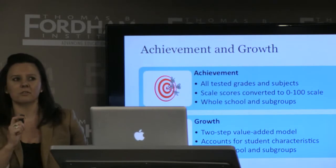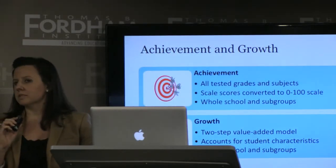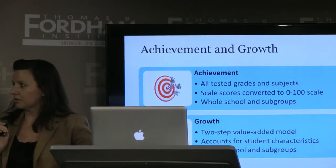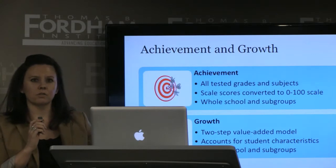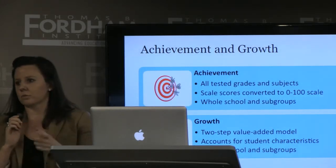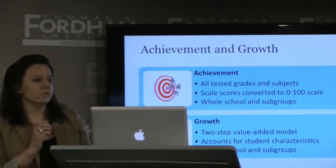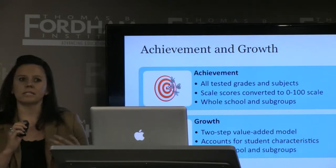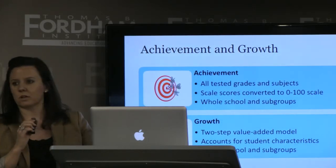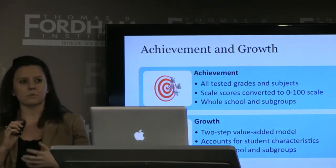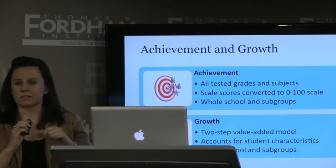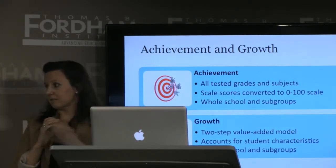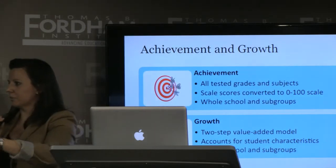Our first indicator of performance is an achievement measure, and this makes two improvements upon NCLB. First, we're looking at all tested subjects, not just math and English language arts. And second, we're giving schools credit for all students along the continuum, not just those students right around the state's proficiency cutoff. We do this by transforming student scores on the state assessments to a 0 to 100 scale, and then we create a measure of how the student on average is doing in the school. We also look at subgroup performance, accounting for different subgroup sizes, making sure one school isn't necessarily held accountable for a very small subgroup when the performance of another subgroup is much different.